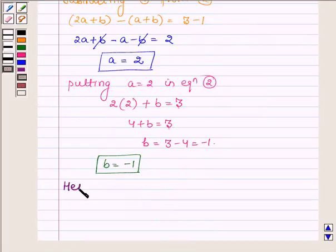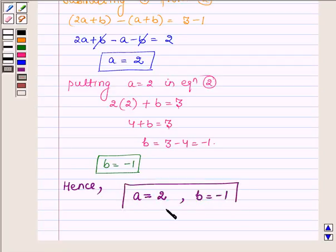Hence the values of a and b are 2 and -1. So this completes the solution. Hope you enjoyed it. Take care and have a good day.